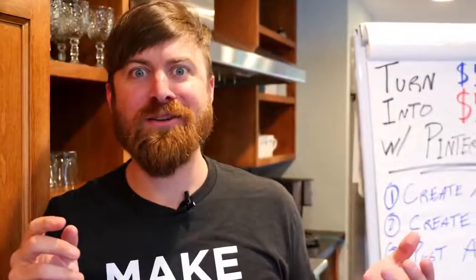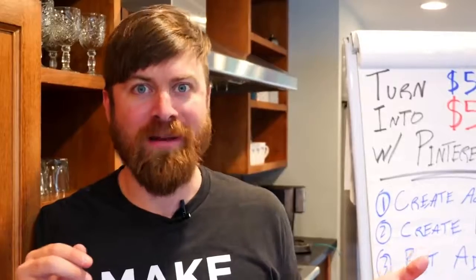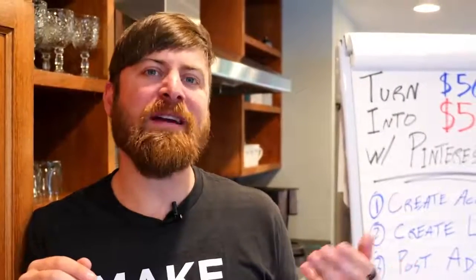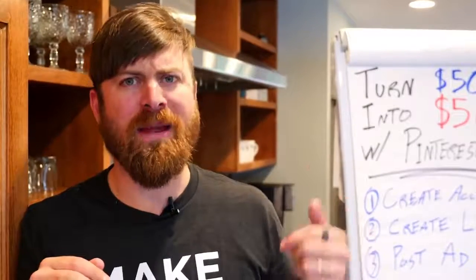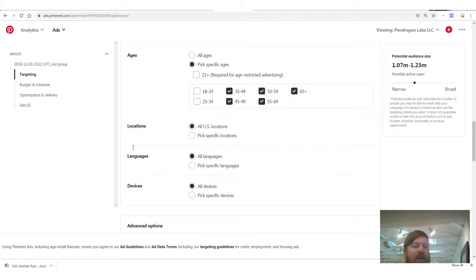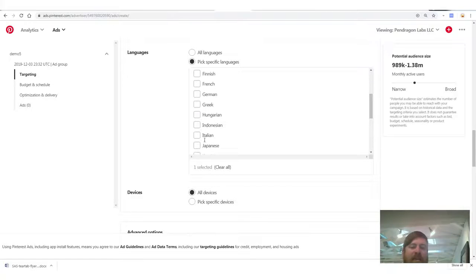I'd rather have those 50,000 people be a much more targeted, much more likely group. 18-year-olds are broke — why would I show my ads to them? Advertise to people who have money, which starts at 35 and up. Next, we're going to only target people who speak English — I'm going to deselect all other languages and just select English. There we go — that limits our reach a little more and makes it a lot more targeted.